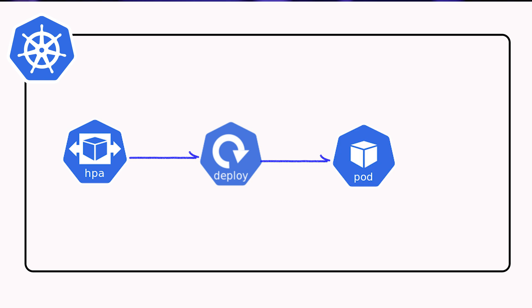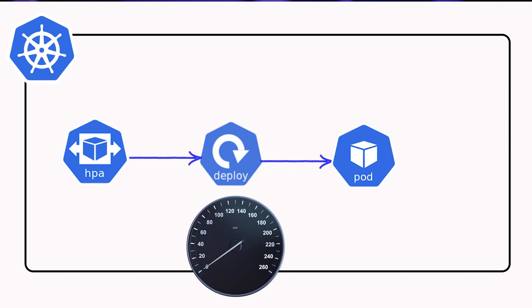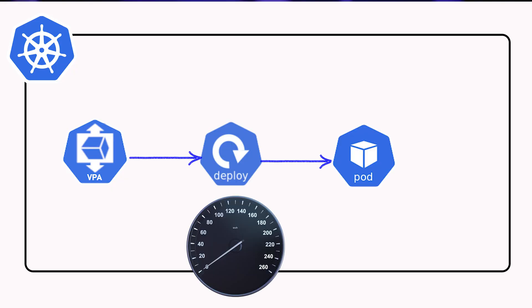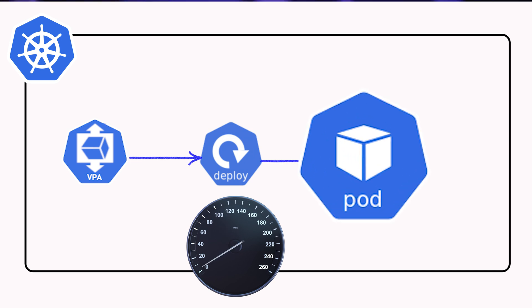We've got two key CRDs. The first is HPA, Horizontal Pod Autoscaler, which adds a replica to your workload — great for deployments and stateful sets. Then we have VPA, Vertical Pod Autoscaler, that will adjust CPU and memory resources. It's not ideal for jobs or even languages using garbage collectors.